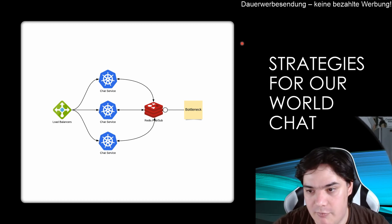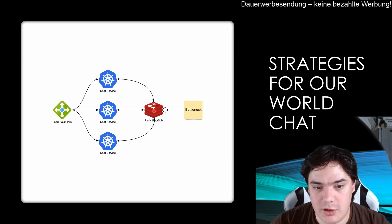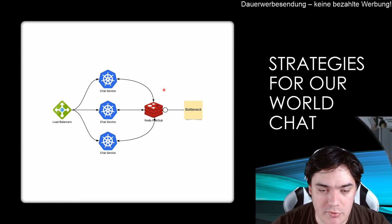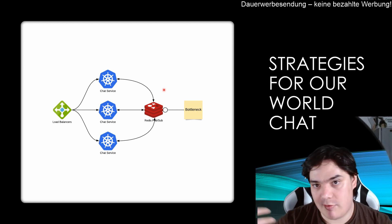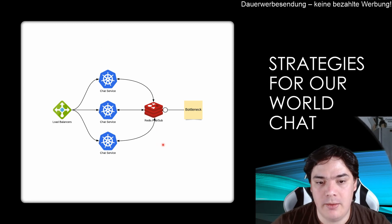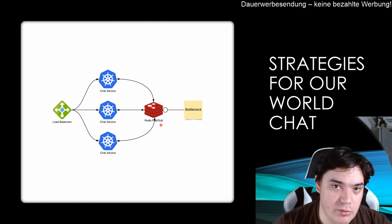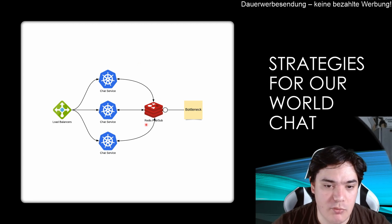We distribute the problem — we have our chat services and an external data source, which is Redis. We leverage Redis just for speed; it's really fast. Since we don't want to persist the chat messages, Redis is a great idea. We could scale endlessly on the chat server side — people connect and get or send messages over Redis via a pub/sub mechanism. In the long run, under heavy load testing, Redis will be the bottleneck because we can scale the service endlessly, but eventually Redis will have problems with all the messages coming in.